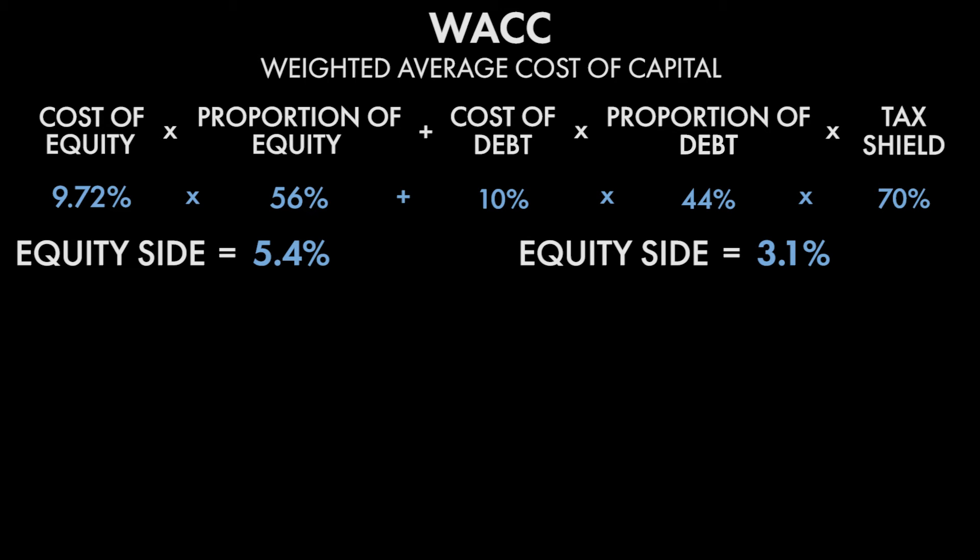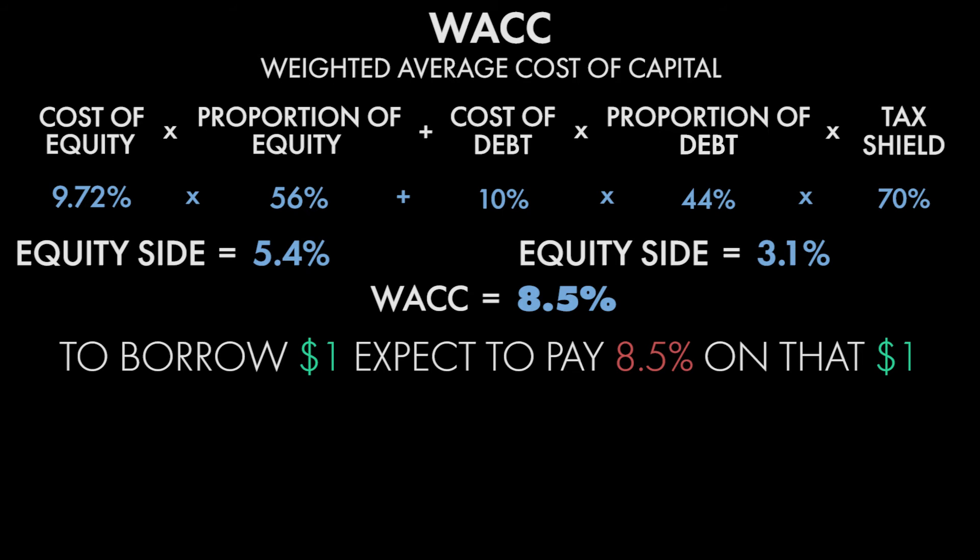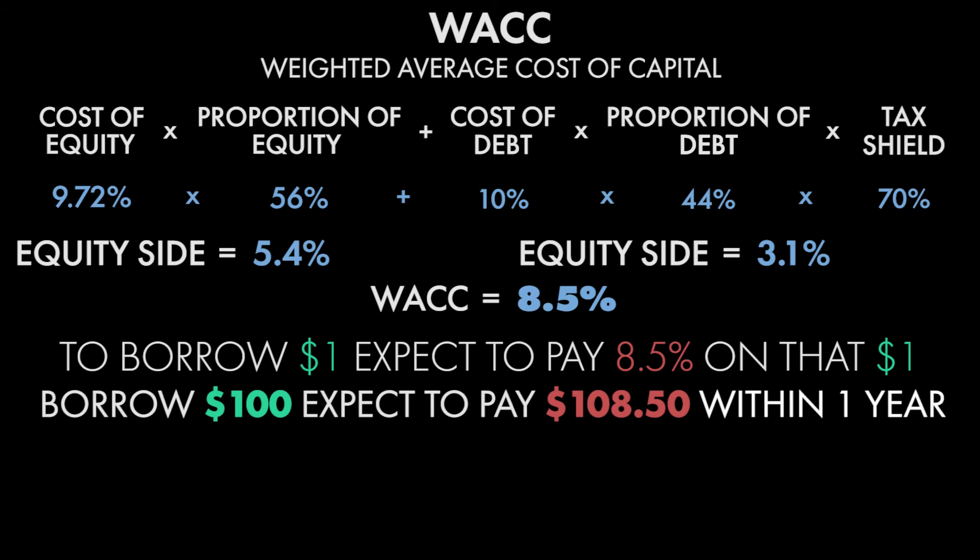Now we have those two numbers — we just add them together. Our weighted average cost of capital for our entertainment company is 8.5%. This tells us that in order to borrow a dollar, we should expect to pay 8.5% on that dollar. If I borrowed $100, within one year I should be prepared to pay back $108.50, because that's how much it costs the company to borrow money or capital.